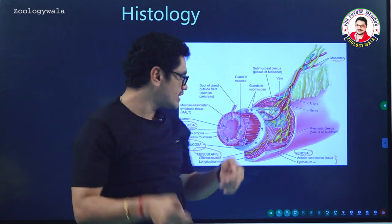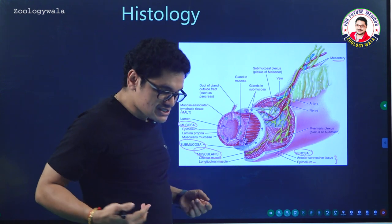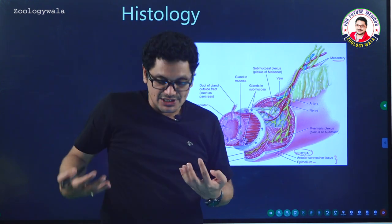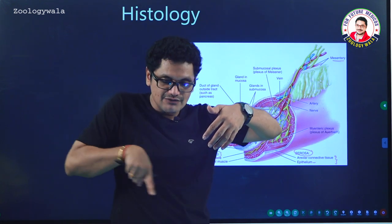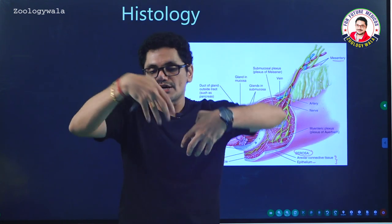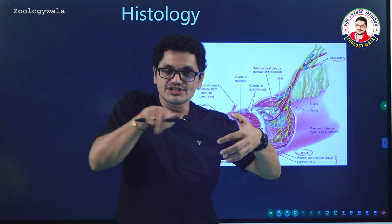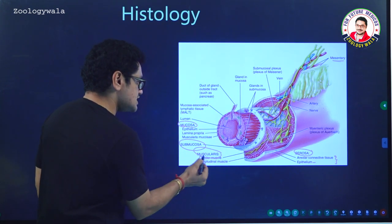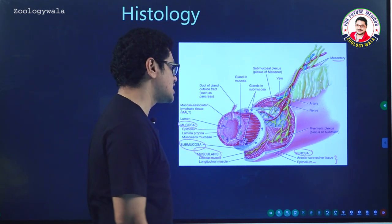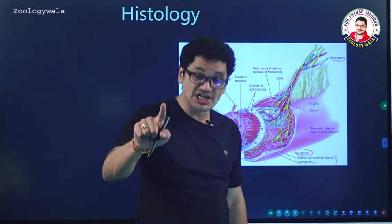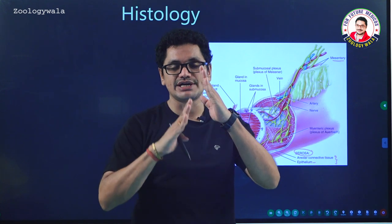Below the serosa is the muscularis. Muscularis contains longitudinal muscles and below which inner circular muscles are present. The longitudinal muscles are present in the form of bundles. So longitudinal muscle layer and circular muscle layer are the two muscle layers present in the wall of the alimentary canal.